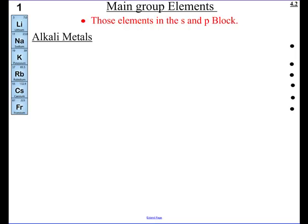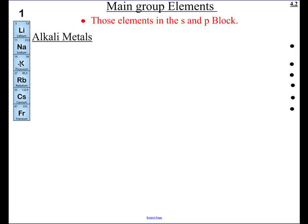Let's look at Group 1. If you notice, it looks like it's missing something. On your periodic table, there is an H at the top of this column because that's where hydrogen resides. But hydrogen is not an alkali metal — hydrogen has no family because of its unique properties. The alkali metals are lithium, sodium, potassium, rubidium, cesium, and francium.